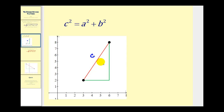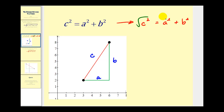So this would be c. Let's call this leg a and this leg b. If we wanted to determine the length of hypotenuse c, we could solve this equation for c by taking the square root of both sides. So we would have c equals the square root of a squared plus b squared.